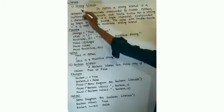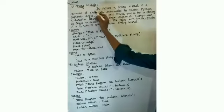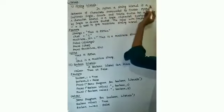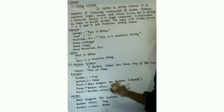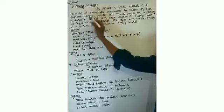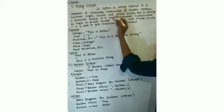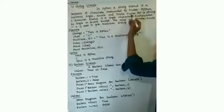Next topic: string literals in Python. A string literal is a sequence of characters. Character means a single letter, so a sequence of characters means a collection of characters surrounded by quotes. Python supports single, double, and triple quotes for a string — a collection of characters enclosed with single, double, or triple quotation marks.